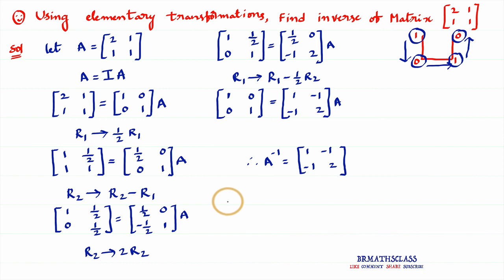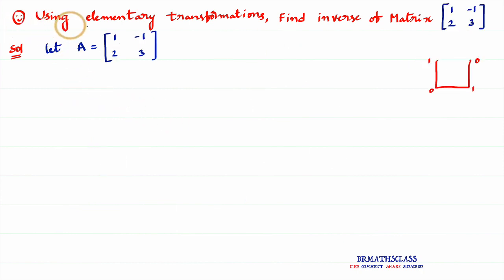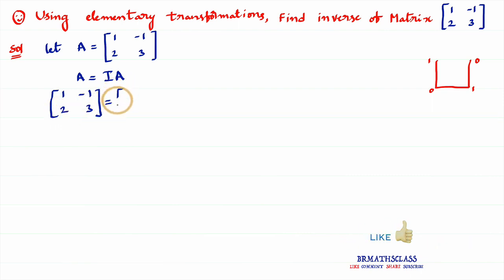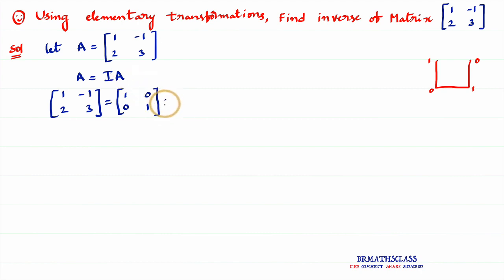Now I will do one more problem of the same type so that you will get more clarity on elementary transformations. The second question asks: using elementary transformations, find the inverse of this matrix. I considered the given matrix as A, so I need to calculate A inverse. The first step is A equal to IA. In place of A, write the given matrix: 1, −1, 2, 3, equal to the identity matrix 1, 0, 0, 1 into A. Write the trailing A as it is.